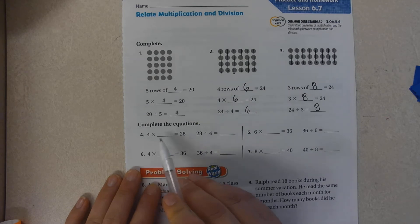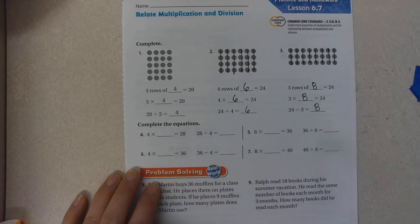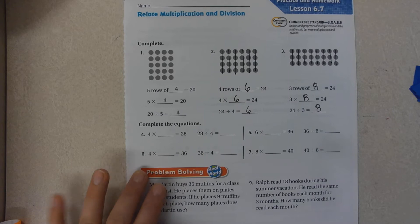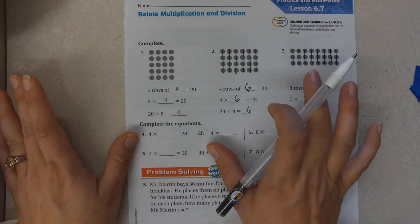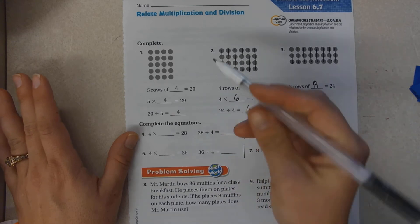4 times what equals 28? 4, 8, 12, 16, 24... 24, 28, 7.